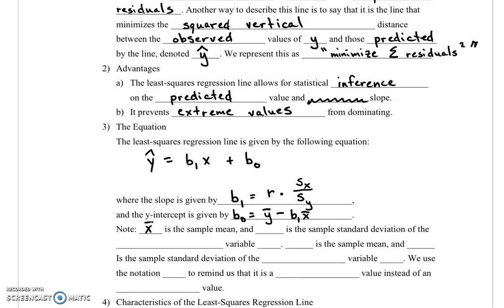X bar is the sample mean, and sx is the sample standard deviation of the explanatory variable, which is x. Y bar is the sample mean, and sy is the sample standard deviation of the response variable, which is y.